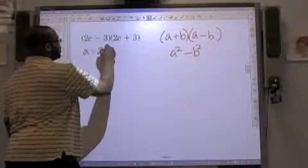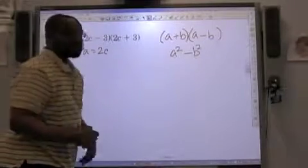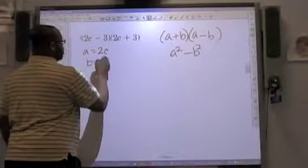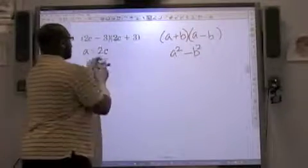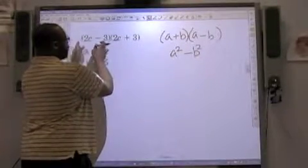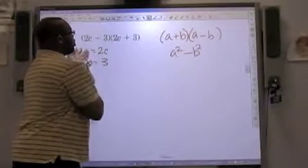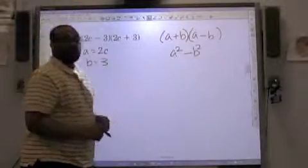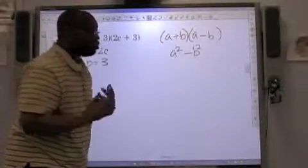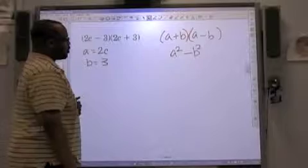Our first term, A, is 2C. And our second term, B, is 3. And I think we all can agree that one of the factors are two numbers being subtracted, or the difference of two numbers. And the other factor is the sum of those same two numbers. So we can use difference of two squares.